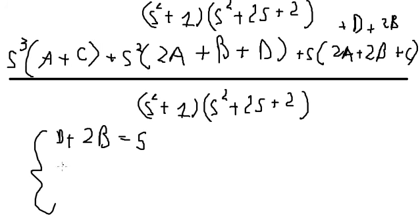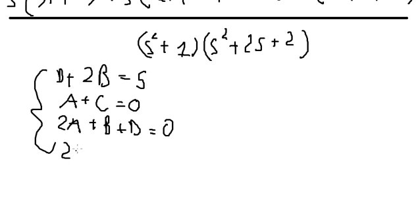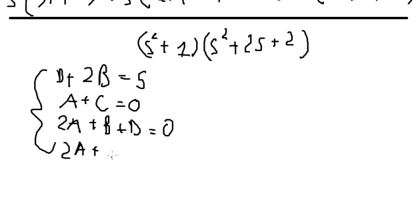So A plus C equals zero. Two A plus B plus D equals zero. And two A plus two B plus C equals zero. From this system we can find A, B, C, and D.